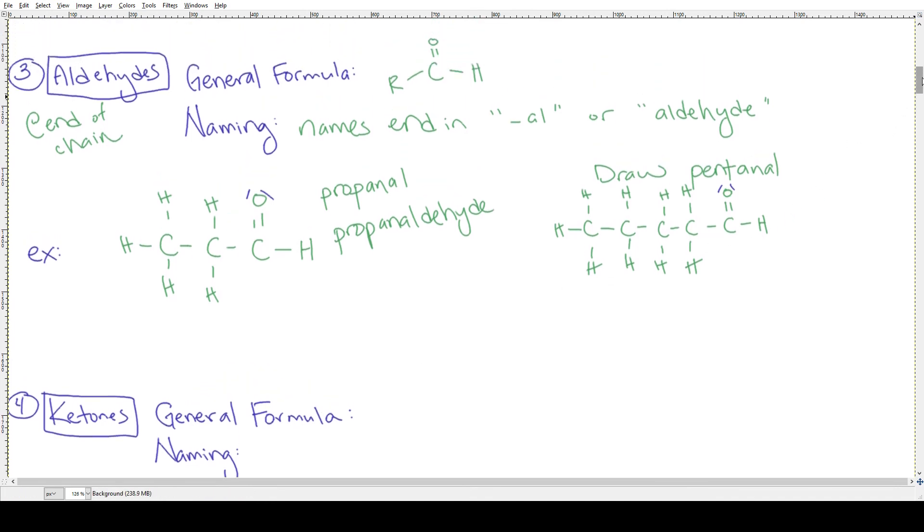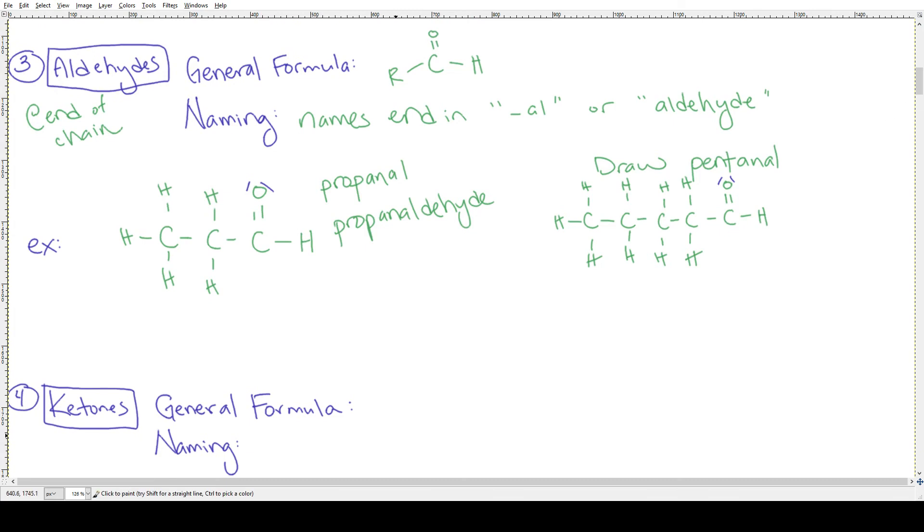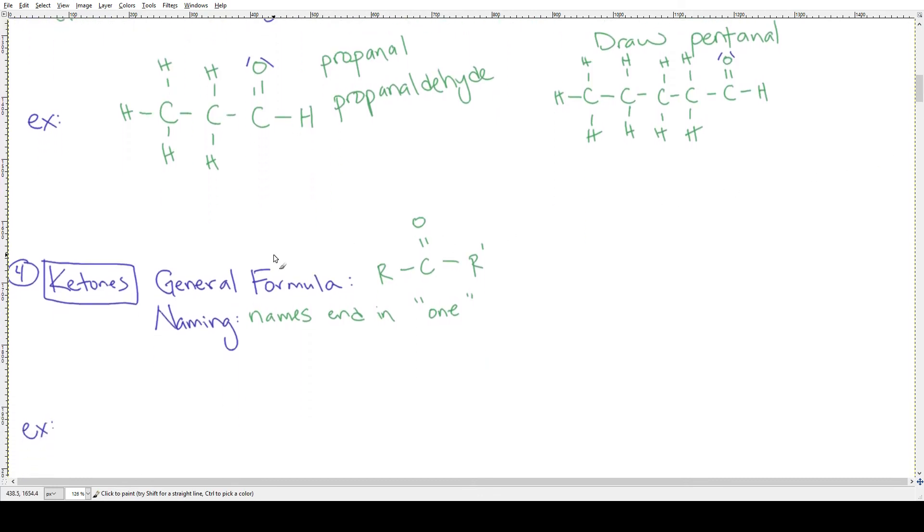Last one, ketones. So ketone general formulas are, again, it's a carbon double-bonded to an oxygen, but this time you have the chain continuing on on either side. R, where you have R'. So R' could be exactly the same as R. It could be different than R. The main key thing here is that it's not hydrogen. And then for the naming, these ones have names that end in -one. Like ketone, -one. They end in -one. All right, so now that you can maybe see the difference between aldehydes and ketones, I'll scroll down a little, and let's do some examples.